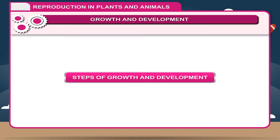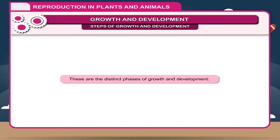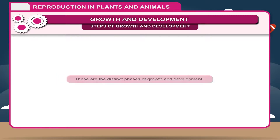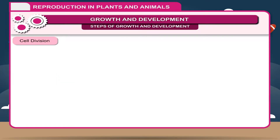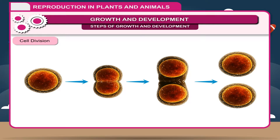Steps of Growth and Development: These are the distinct phases of growth and development. Cell Division is an important feature of living organisms through which multicellular organisms grow in size. The number of cells increases due to mitotic division.